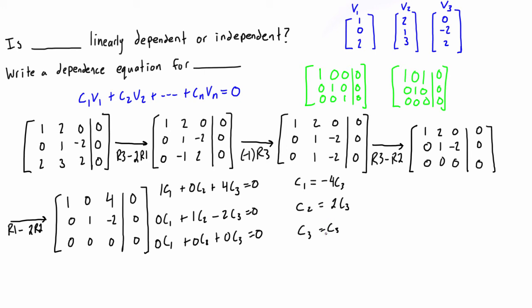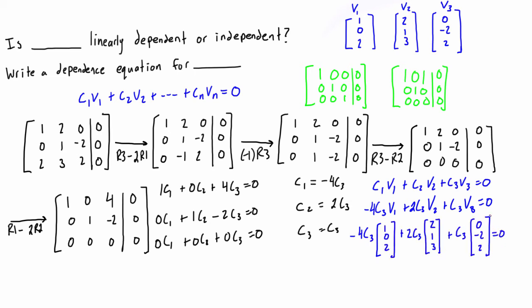Now we write the dependence equation. We plug our values into c1v1 + c2v2 + c3v3 = 0. Since c1 = -4c3 and c2 = 2c3, this becomes: -4c3·v1 + 2c3·v2 + c3·v3 = 0. You can also write this in vector form by expanding out the vectors. Either form is an acceptable dependence equation depending on what your professor is looking for.